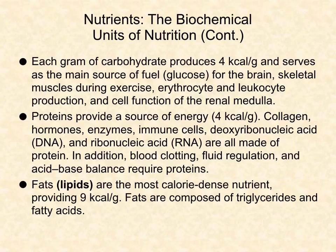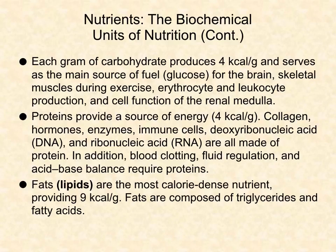Each gram of carbohydrate produces 4 kcal per gram and serves as the main source of fuel for the brain, skeletal muscles during exercise, erythrocyte and leukocyte production, and cell function of the renal medulla. Proteins also provide a source of energy at 4 kcal per gram. Collagen, hormones, enzymes, immune cells, DNA, and RNA are all made of protein. Blood clotting, fluid regulation, and acid-base balance also require proteins.